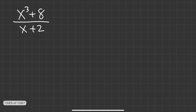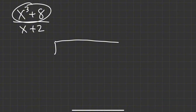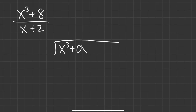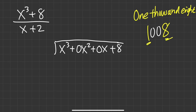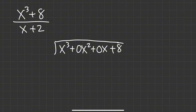Now let's try this one. We have x cubed plus 8 on the top. When we do long division, if we don't see any of the intermediate powers, we have to put a 0. So we write x cubed plus 0x squared plus 0x plus 8. The reason is just like if I ask you to write a check for $1,008 — you have to put the 0s in between to indicate we have 0 times 100 and 0 times 10. That's exactly why we have to do it here. It's a placeholder and you will absolutely need it.